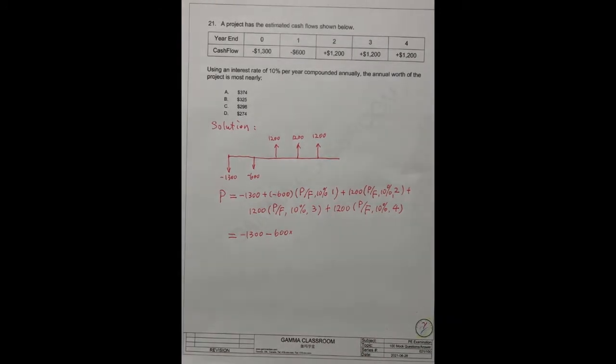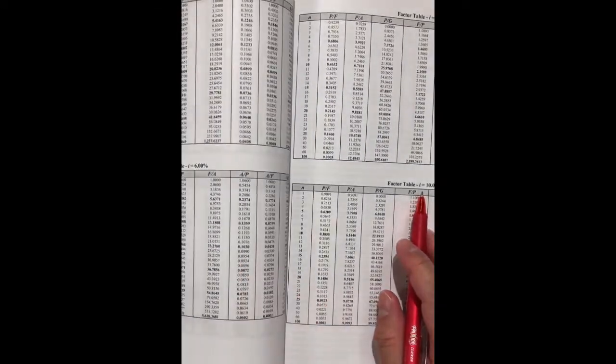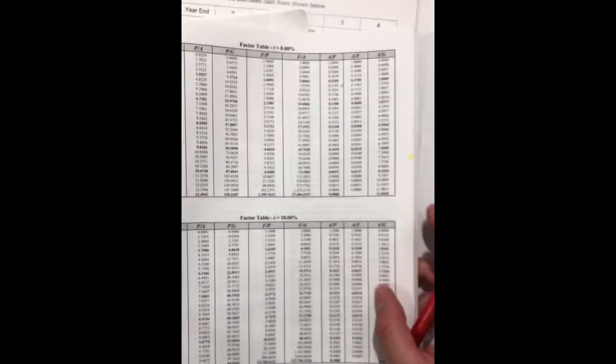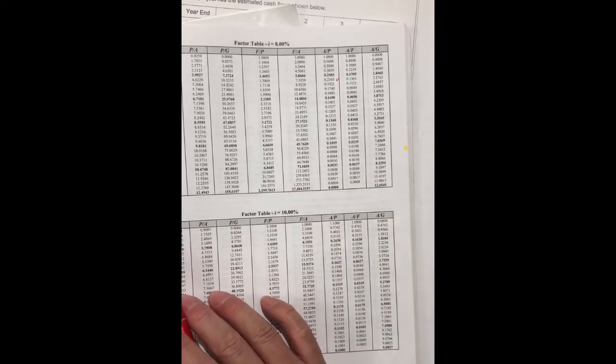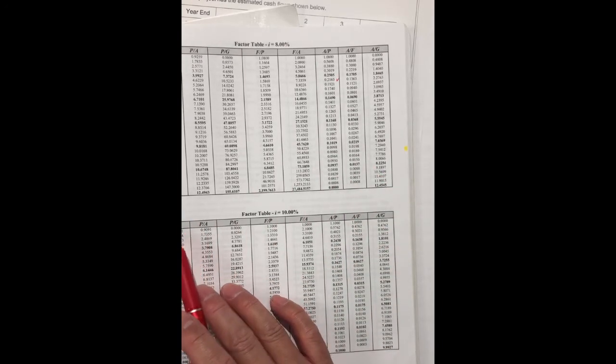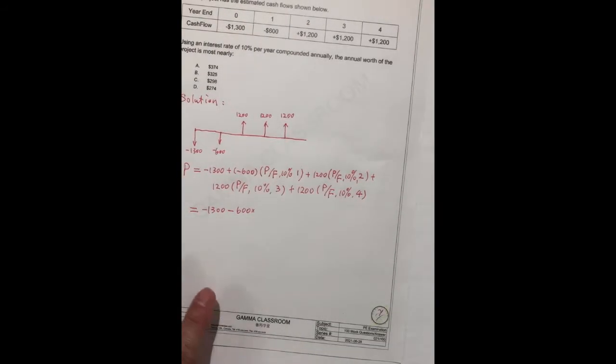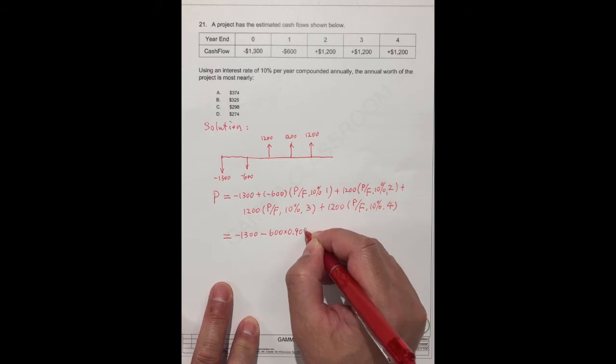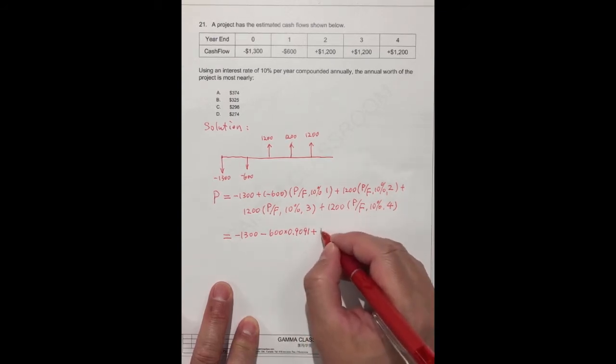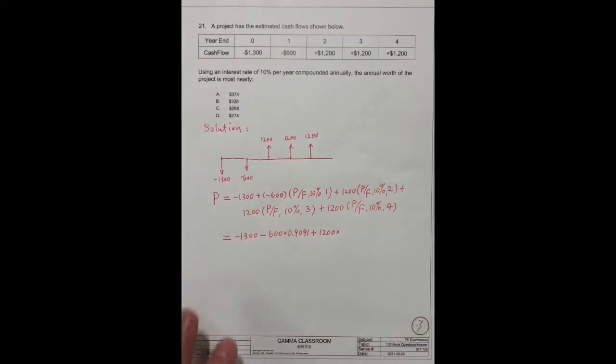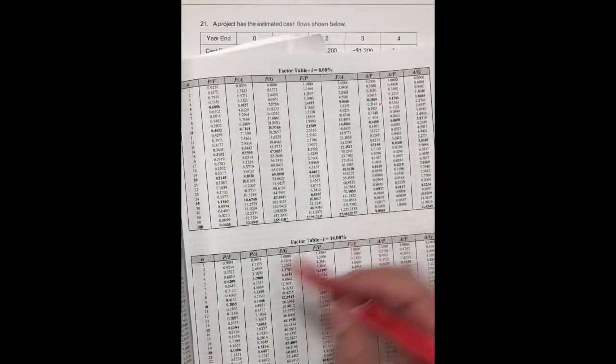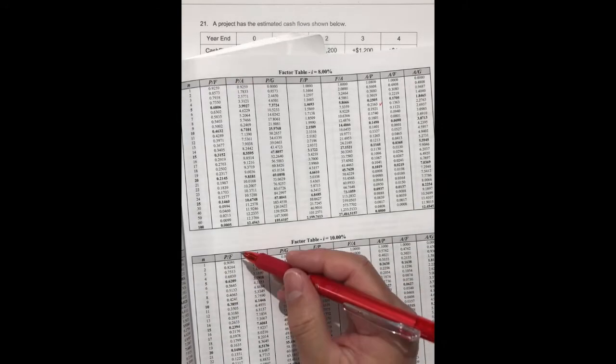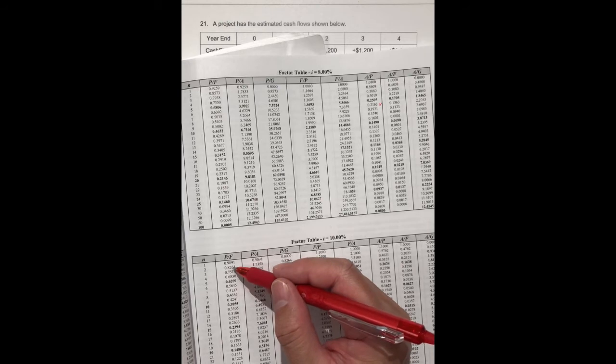This is 10%. This is 10%, one year. We know the future number, we need the present number. This is 0.9091. So times 0.9091. And plus $1,200 times 10%, two years. This is future number, get the present number. It's 0.8264.